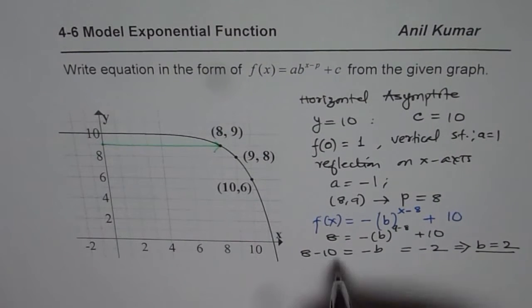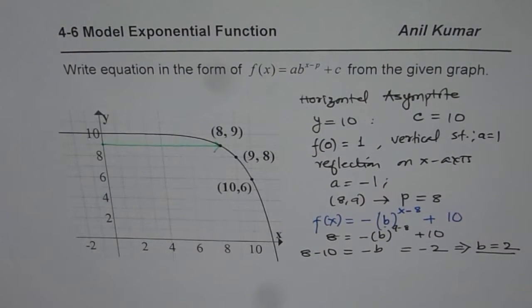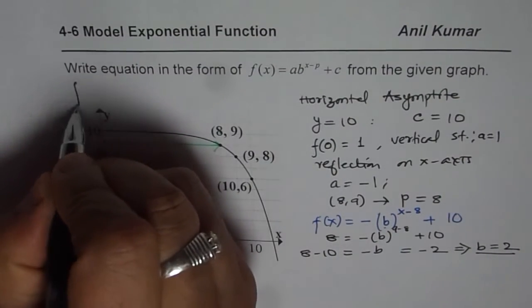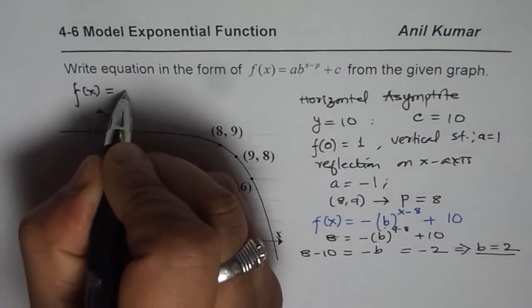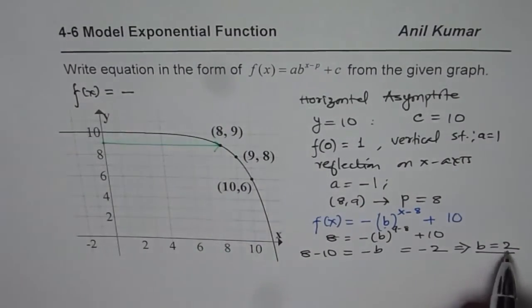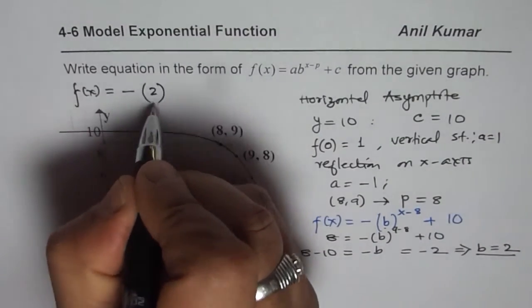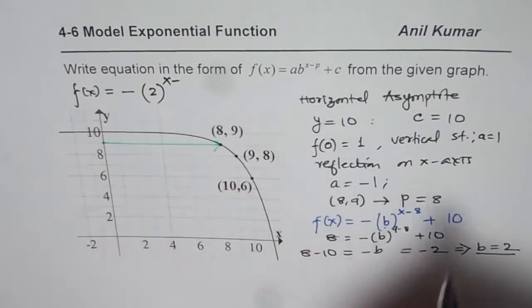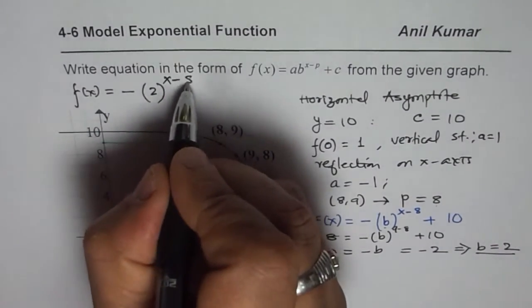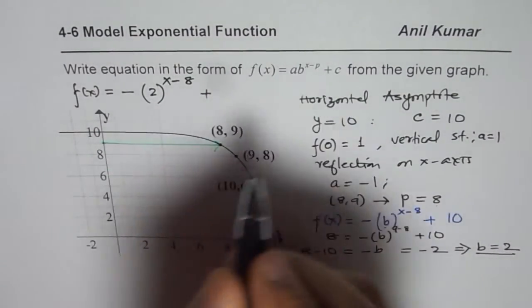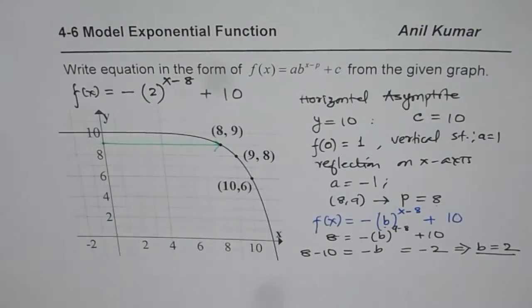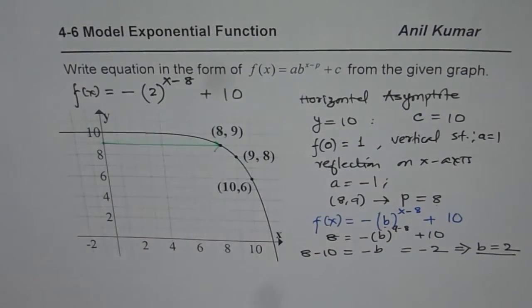Once you get b equals to 2, you know the equation. So now we can write down our final solution, which is f(x) equals to minus, b is 2 for us, 2 to the power of x minus, p is 8 for us, plus c, which is 10. So that is how you can get the equation.